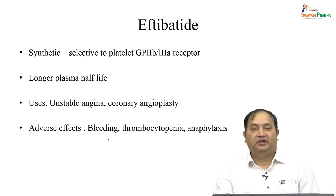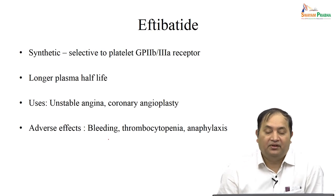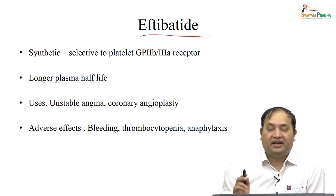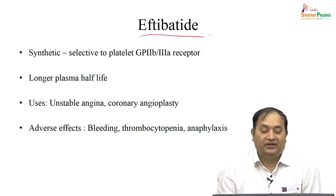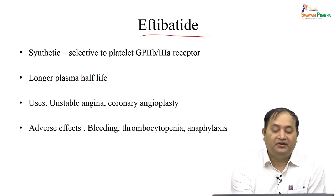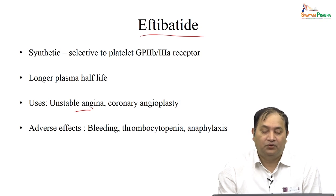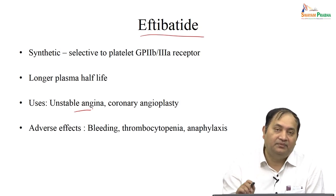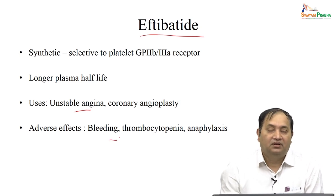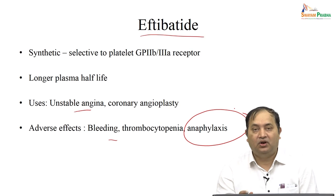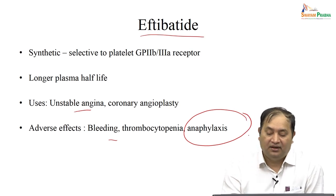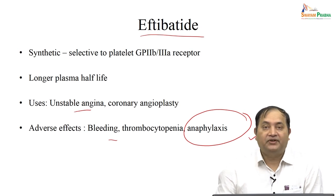Among glycoprotein 2B/3A receptor antagonists, we also have eptifibatide. It is a synthetic drug, selective for platelet glycoprotein 2B/3A receptors, but it has a very long plasma half-life. It is most commonly used in unstable angina or coronary angioplasty. It has a similar adverse effect profile to other drugs — bleeding and thrombocytopenia — but one has to be careful about anaphylaxis. If there is a history of any allergy, it should be avoided due to the risk of anaphylaxis.